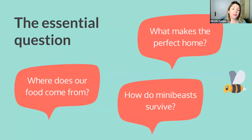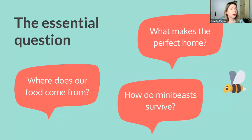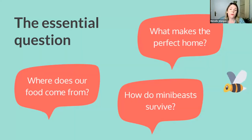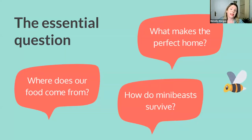For 'Where does our food come from?' we might look at seasonal crops in the local area, veganism, or recipes and cooking. With 'How do minibeasts survive?' we could look at their habitats, the food cycle, or even human effects on biodiversity. These would obviously depend on the students' age, developmental level, and linguistic level.